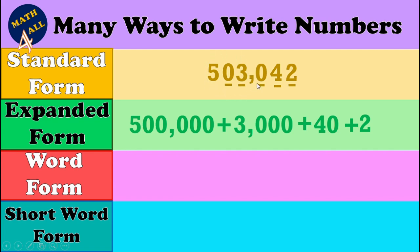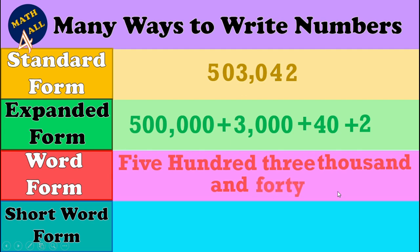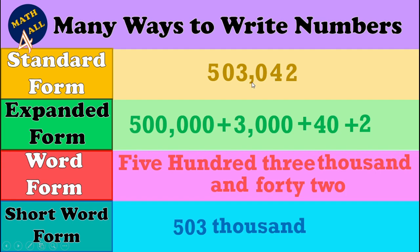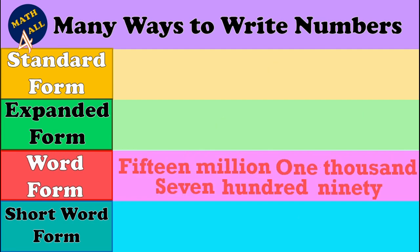The word form is: five hundred three thousand and forty-two. For the short word form, we write the numbers in digits and the name of the house in letters. So I write five hundred three in digits, then thousand in letters, and drop the forty-two in digits: five hundred three thousand, forty-two.